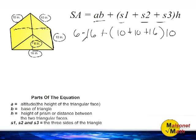Now, next I am going to multiply 6 times 16, which would give us a product of 96. And then we are going to add the different side lengths of the triangle located inside the parentheses here, which would give us a total of 36 inches.